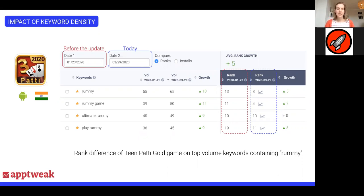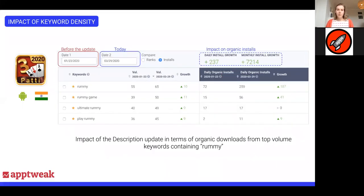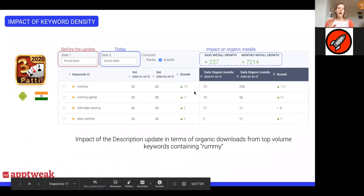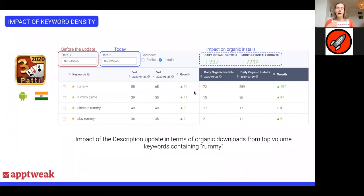A lot of our clients, when we show them these results, ask: how does that translate in terms of downloads? Because most of the time your manager just wants to know the impact on downloads. We estimate the number of installs that a particular keyword can bring to your app in a specific country. Comparing numbers before and after the change, on these four keywords only, the ranking increase translated into more than 200 daily installs, which is more than 7,000 monthly installs — a big impact in terms of what you win in the end.